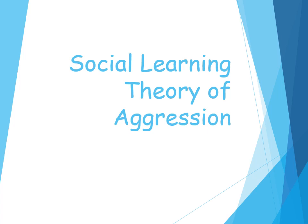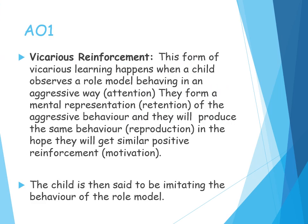Social learning theory of aggression is one of the social psychological explanations of aggression. There are three of those, which include social learning theory, de-individuation, and frustration aggression. The core idea is that people have learnt to be aggressive through vicarious reinforcement — in particular, when you observe a role model being aggressive.